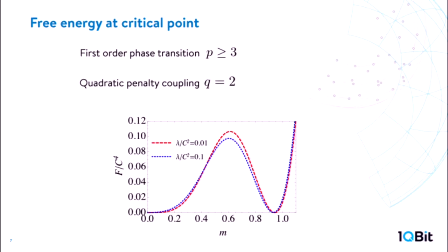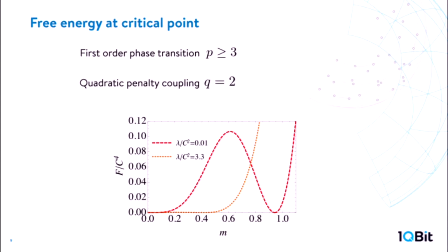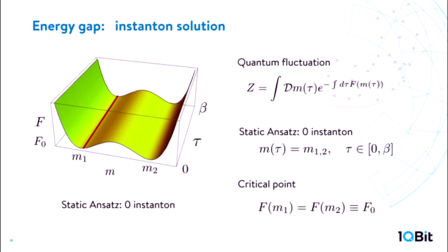Now we increase the penalty in this system. As you see, the potential barrier starts to become smaller — at penalty 0.1, then 0.6. As you increase the penalty, eventually this first-order transition disappears. This is very good for quantum annealing. Now we want to evaluate the energy gap and understand how it becomes larger. The most common way to estimate the energy gap is the instanton solution. To compute the instanton, we go back to the free energy and the partition function in the path-integral formalism.